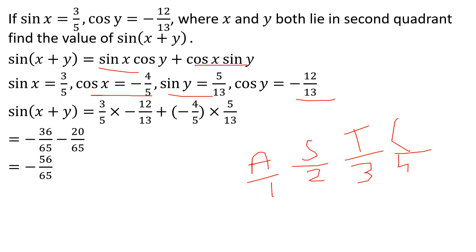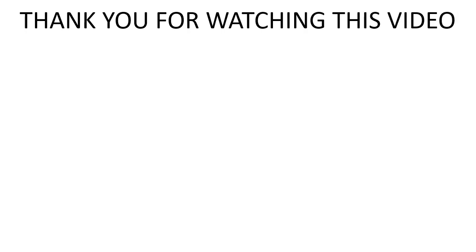To find unknown values, we use the identity sin squared x plus cos squared x equals 1, and sin squared y plus cos squared y equals 1. With that, the trigonometry topic is complete.